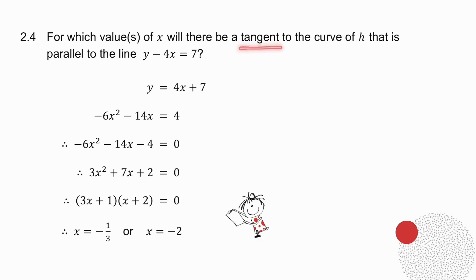If I want a tangent that is parallel to it, it means I want the derivative to the curve to be equal to 4. So I take the derivative equals 4 and I solve the equation, and I get two values of x.